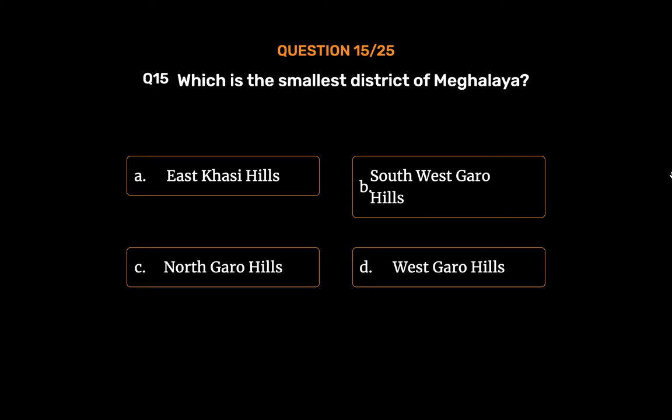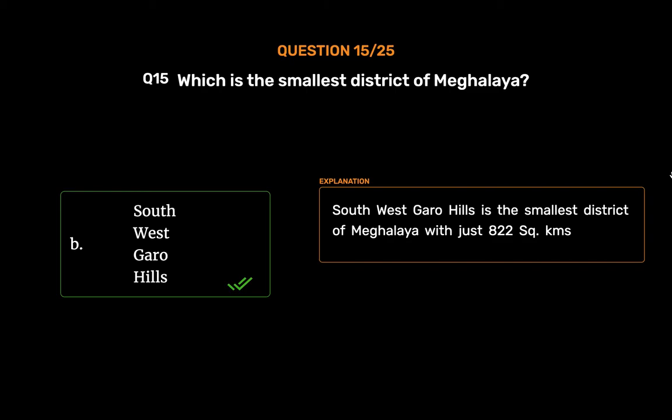The correct answer is Option B: South West Garo Hills. South West Garo Hills is the smallest district of Meghalaya with just 822 square kilometers.